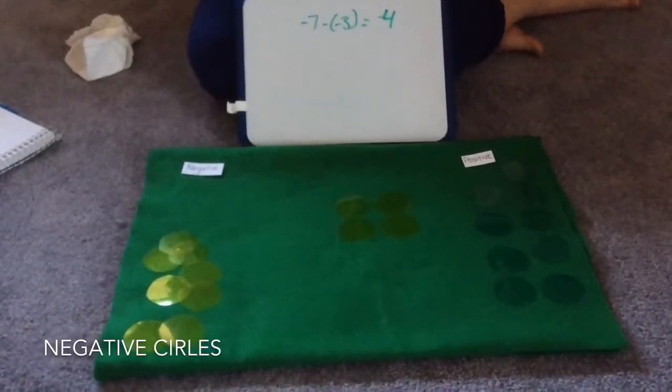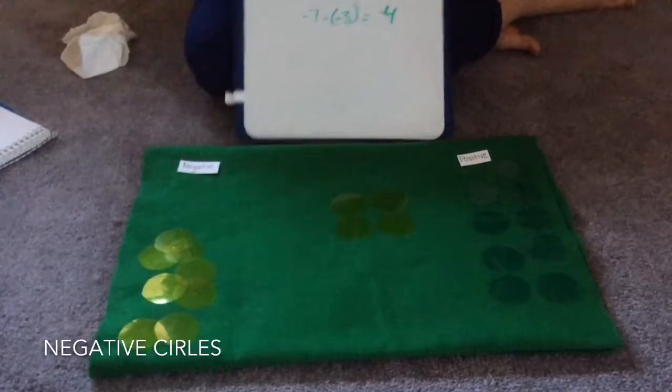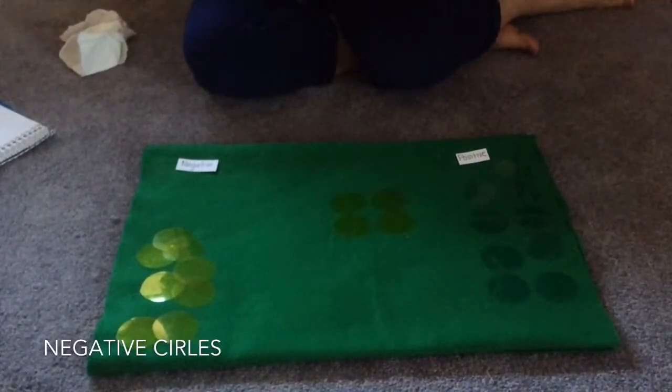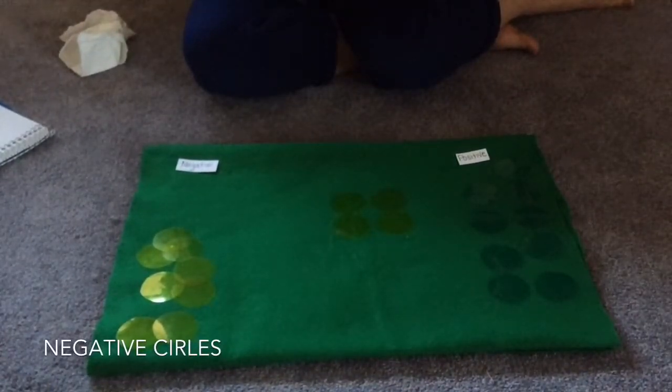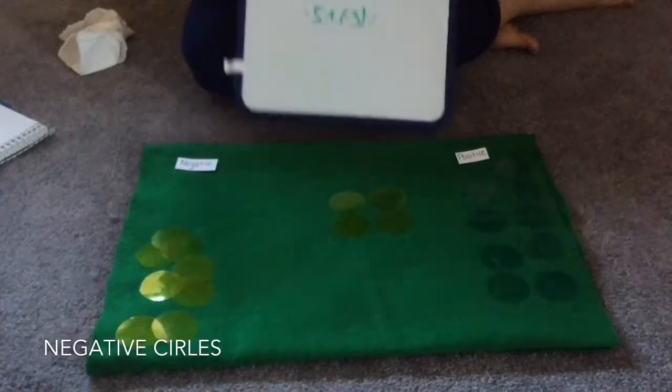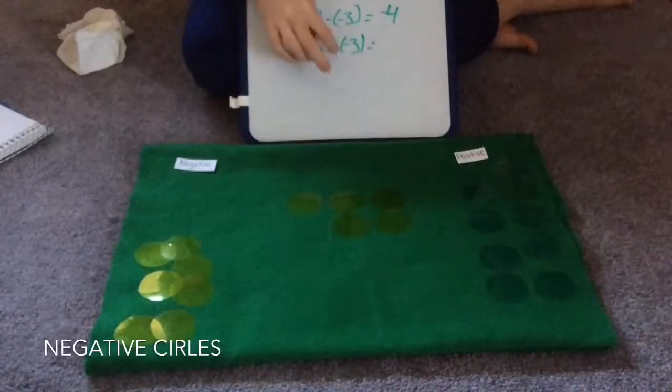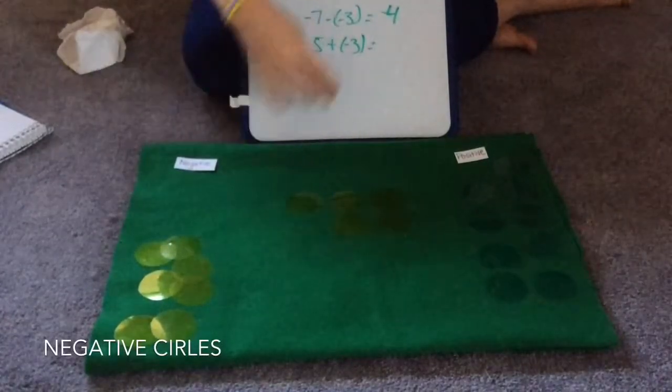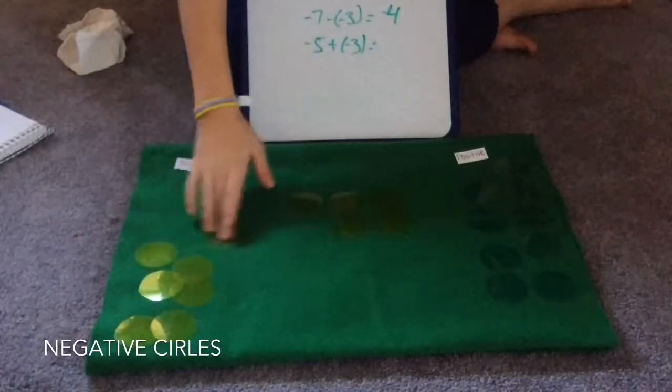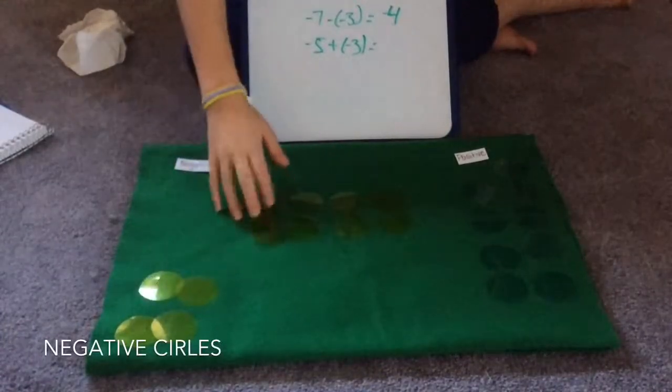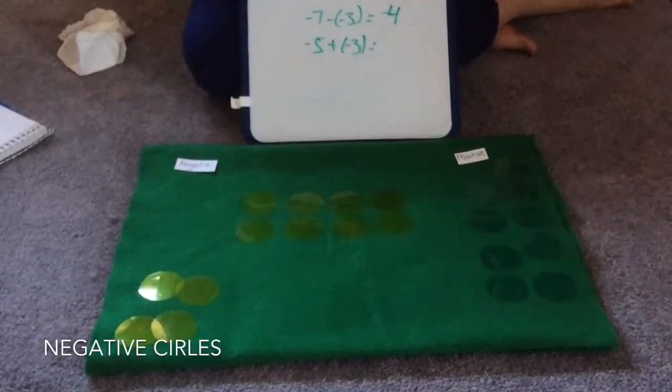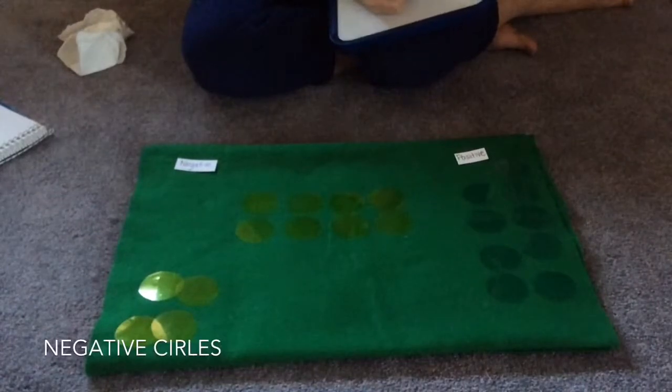So another little bit different is if we had negative five plus negative three. So let's get five negatives to start off with. And then plus, we're going to add to the mix three more negatives. So add one negative, two negatives, three negatives. And in the end, we have eight negatives. So negative eight is our answer.